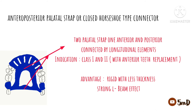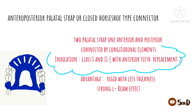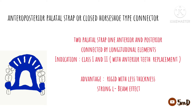Next we have the anteroposterior palatal strap. As the name suggests, there are two palatal straps — one in the anterior and one in the posterior — connected by flat longitudinal elements on either side. It can interfere with phonetics due to the wide coverage, but the advantages are many. It is indicated in Kennedy Class 1 and Class 2 with distal extension support and also for anterior tooth replacement. It is rigid with very little thickness and also benefits from the strong L-beam effect.